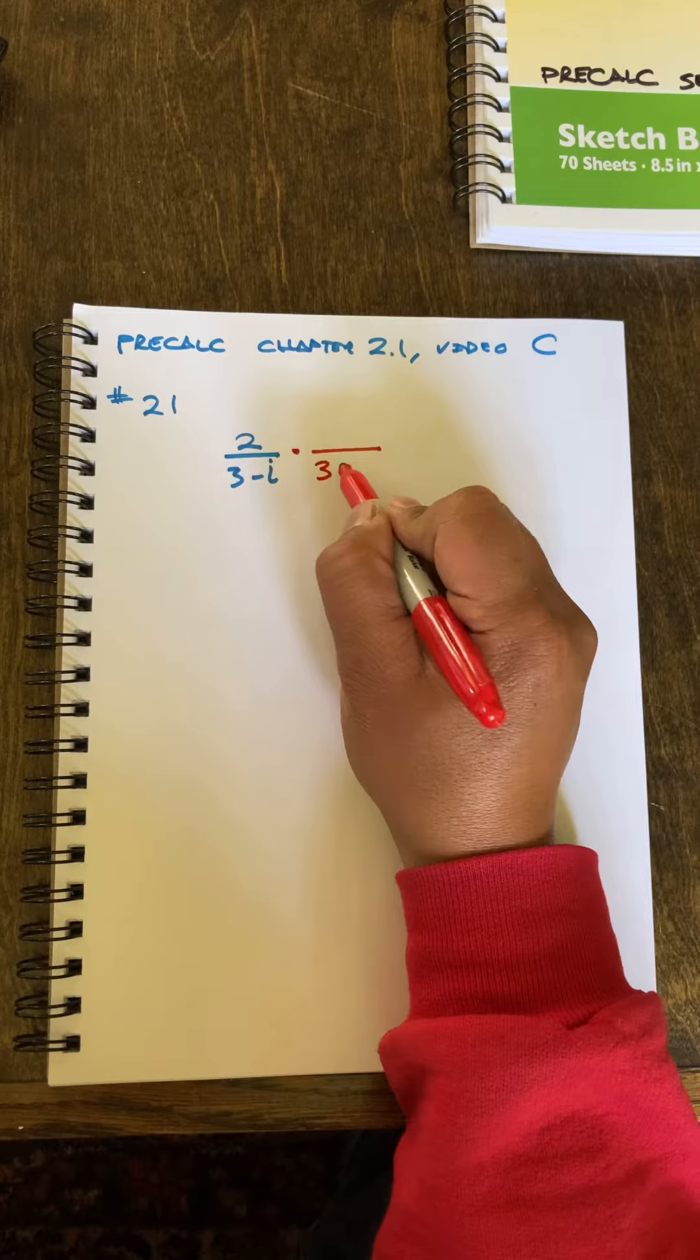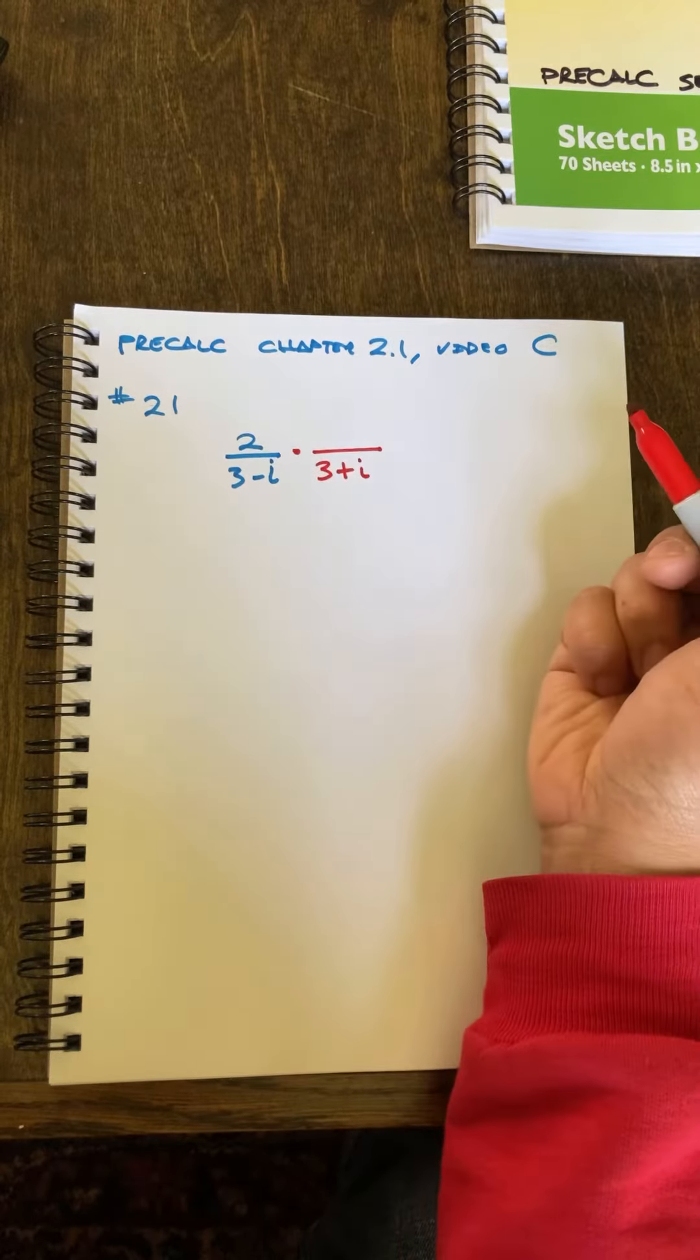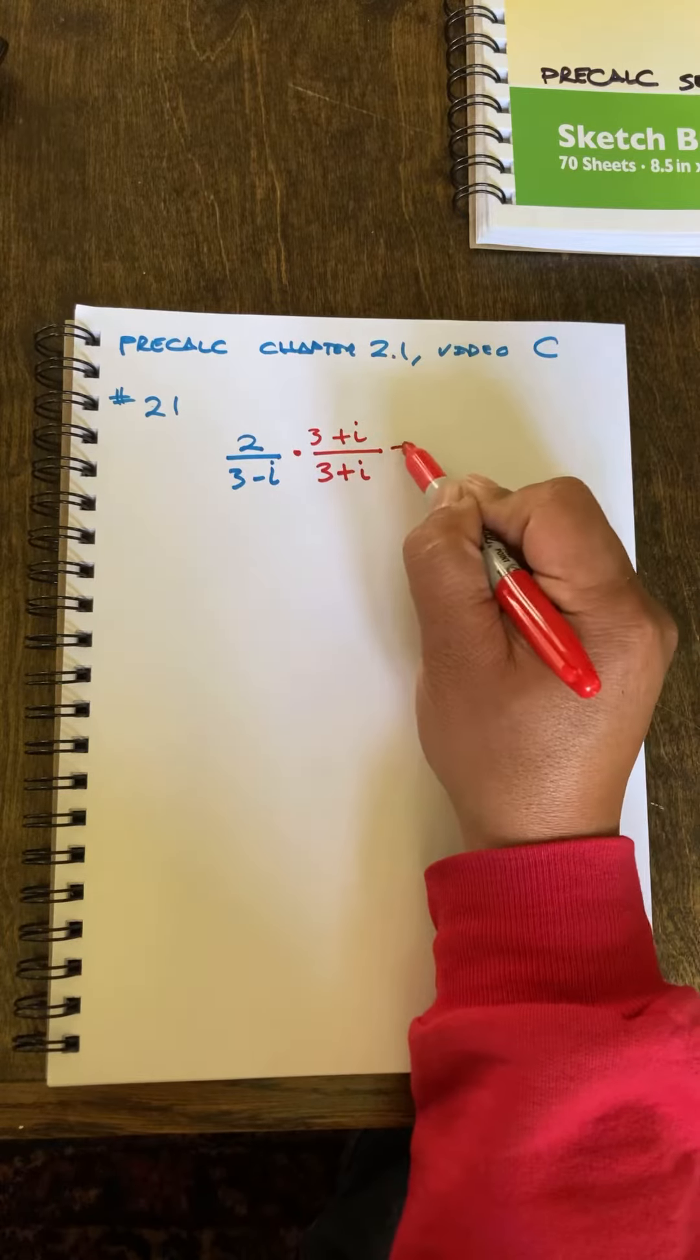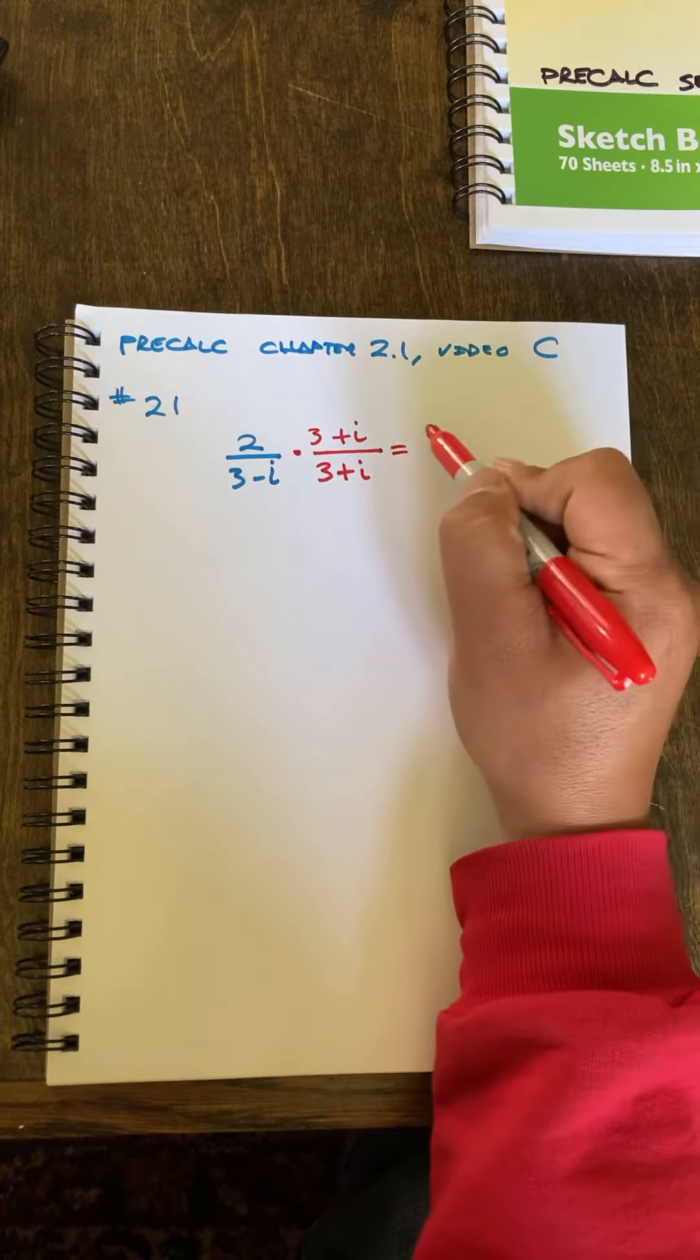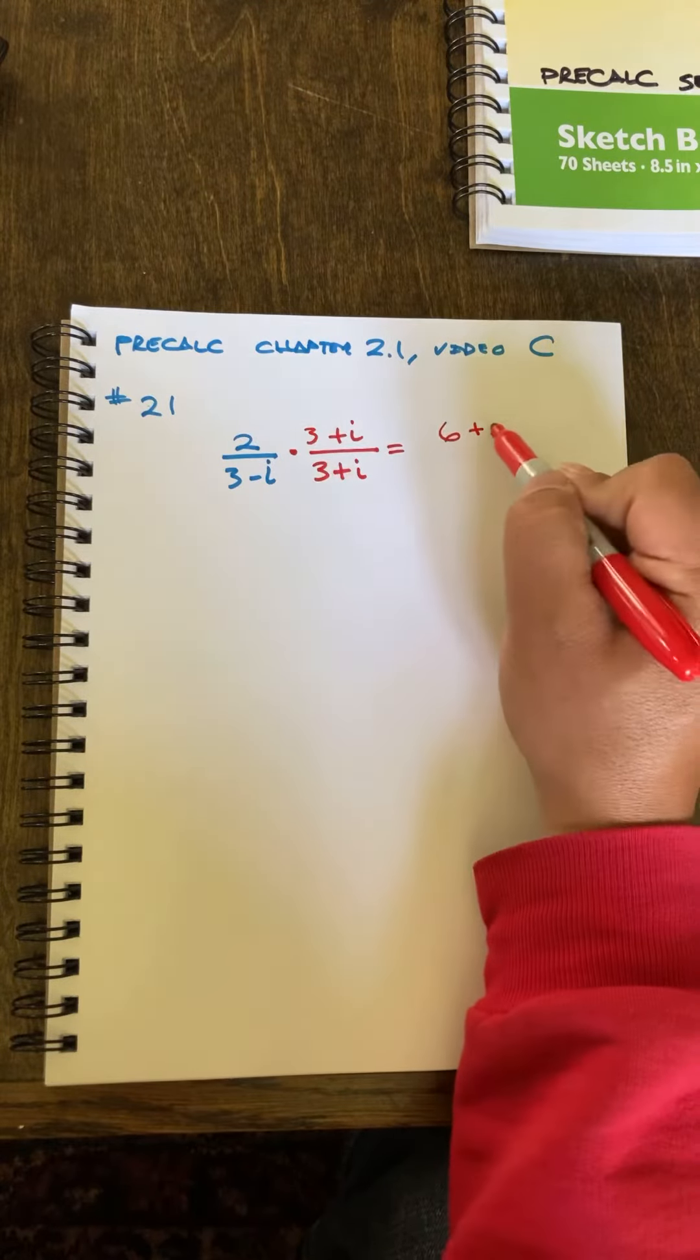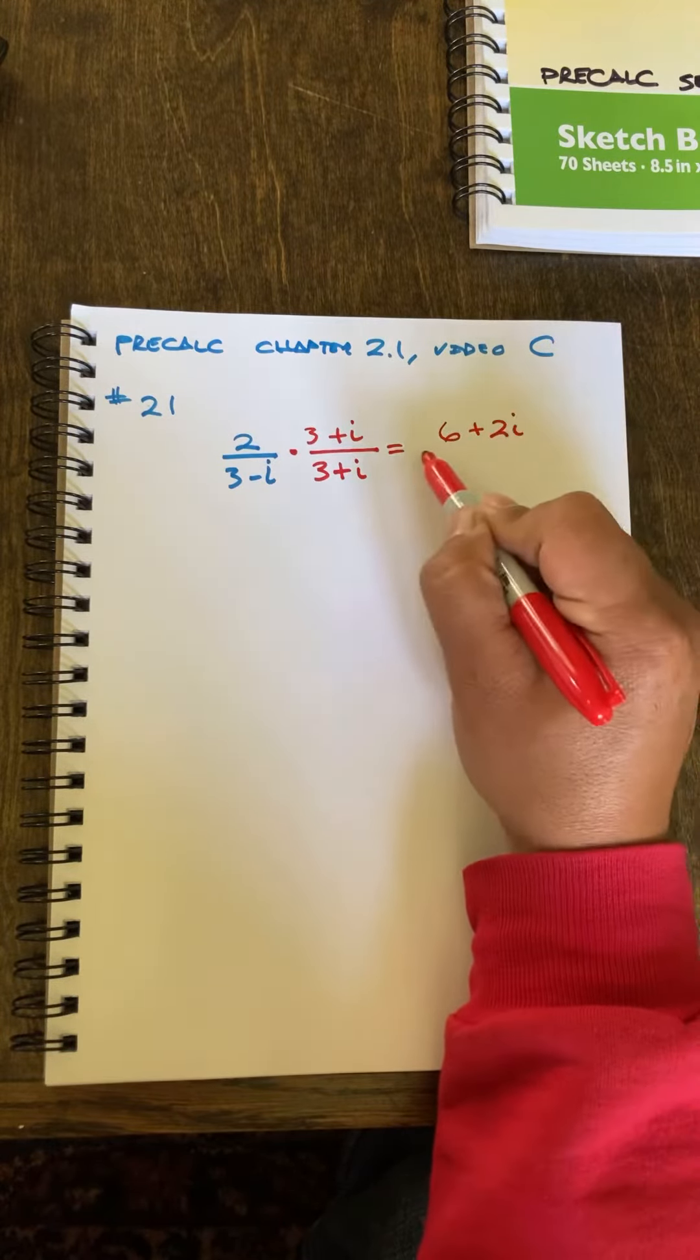which in this case is 3 plus i. And I got to do that in the numerator as well. So up top, 2 times 3 is 6, 2 times i is 2i. That takes care of that.